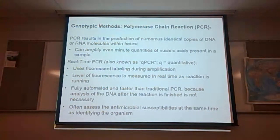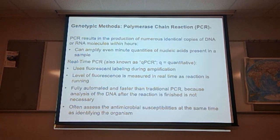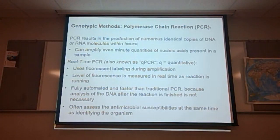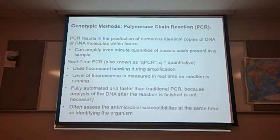Polymerase chain reaction — we've been hearing a lot about PCR lately. PCR results in the production of numerous identical copies of a DNA or RNA molecule within just a few hours, and can amplify even minute quantities of nucleic acids present in a sample. Real-time PCR, also known as qPCR or quantitative PCR, uses fluorescent labeling during the amplification process. The level of fluorescence is measured in real-time, and it is fully automated and faster than traditional PCR because analysis of the DNA after the reaction is not necessary.